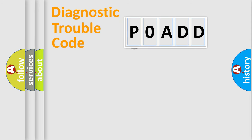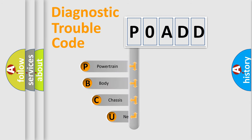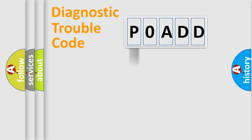First, let's look at the history of diagnostic fault code composition according to the OBD2 protocol, which is unified for all automakers since 2000. We divide the electric system of an automobile into four basic units: Powertrain, Body, Chassis, and Network. This distribution is defined in the first character of the code.